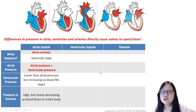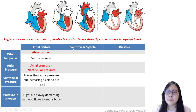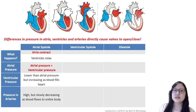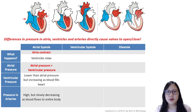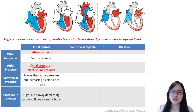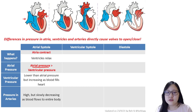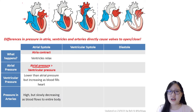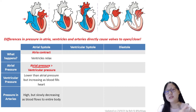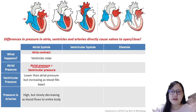Now let's look at pressure differences across the cardiac cycle. During atrial systole, atrial pressure is higher than ventricular pressure because the atria is contracting while the ventricles are relaxing. As blood fills the heart, ventricular pressure gradually increases. Arterial pressure remains quite high throughout but slowly decreases as blood travels to the body — the arteries are never empty.